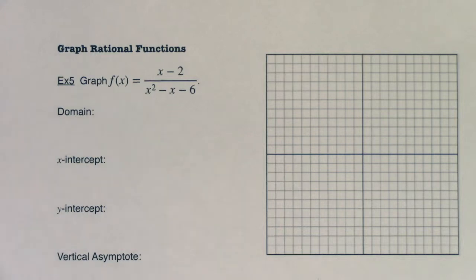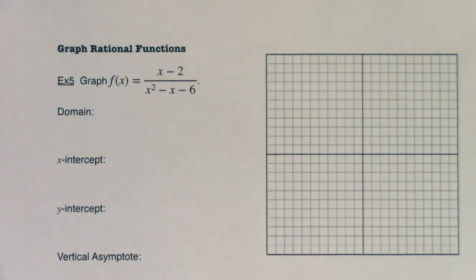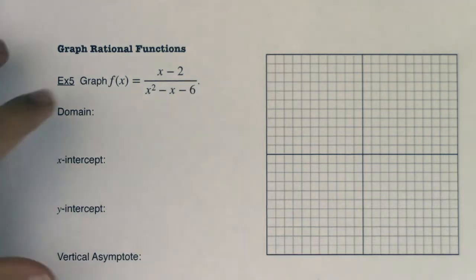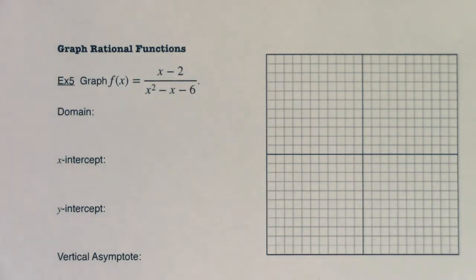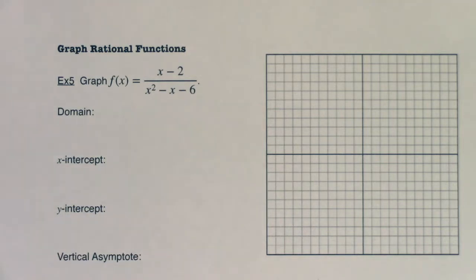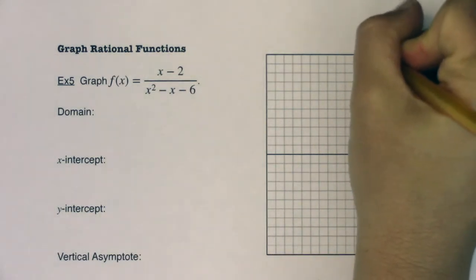Okay, we're going to graph some rational functions. There are six traits: domain, x-intercept, y-intercept, vertical asymptotes, end behavior, and range. Those are the traits that will be on your midterm. I would really encourage you to try and graph these without technology first, then use technology once you get stuck or to check your work, because I will want to see the algebra behind it.